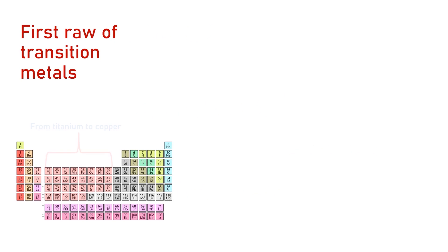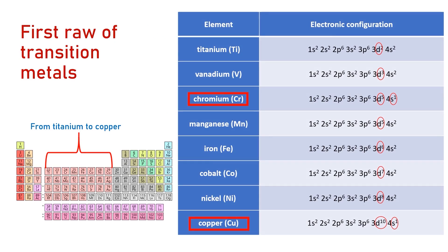Let's look at the electron configuration of the first transition elements. The 4S orbital is normally completely filled with two electrons, and the 3D is successively filled from left to right of the periodic table. Titanium has two electrons in the 4S and two electrons in the 3D. The 4S subshell has a slightly lower energy than the 3D, which is why titanium loses the two electrons in the 4S, forming the titanium-2 ion.